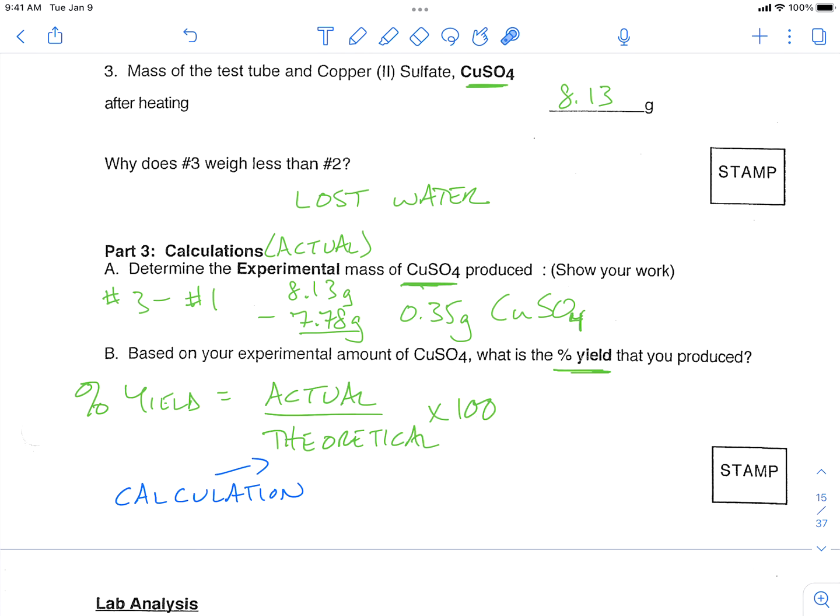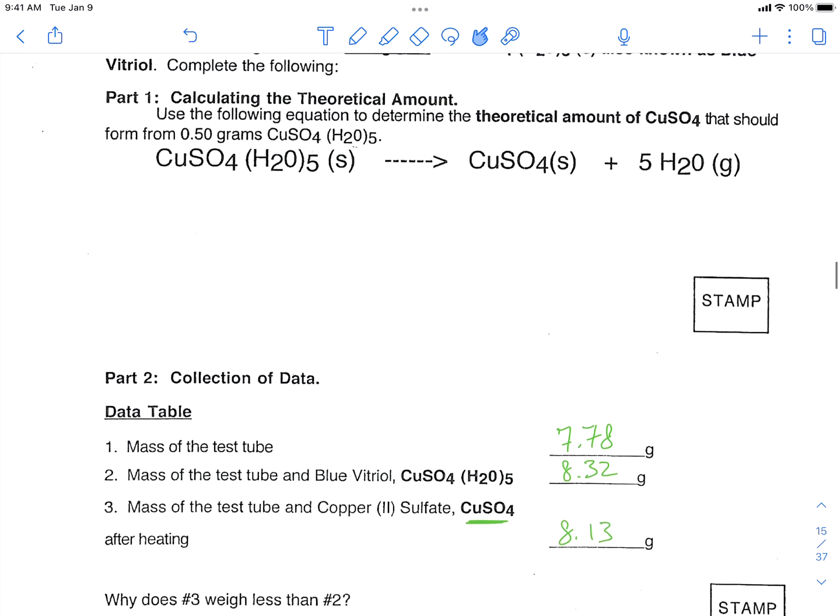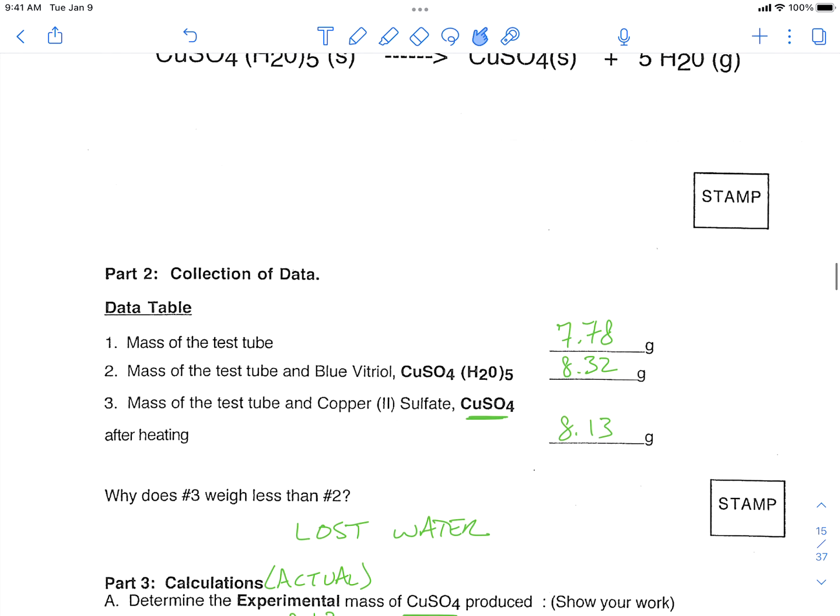So for that, what we need to do is we need to take a look at what did we start with, and because our theoretical yield is based upon how much we started with. In our lab, we were supposed to start out with approximately 0.5 grams. I came out a little bit more than that when we weighed it out, but it didn't really matter so much.